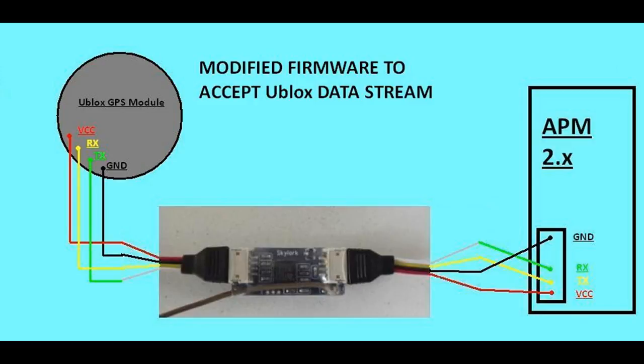So the information that's being passed from the GPS module to the APM, as it's going through the Skylark convert module, it is converted, it's encoded into that brown wire through your video transmitter down through the audio line to your ground station.